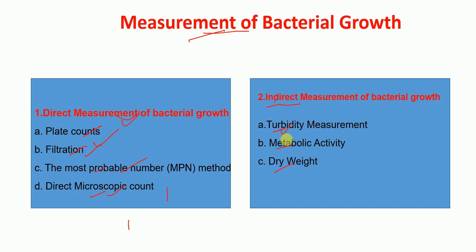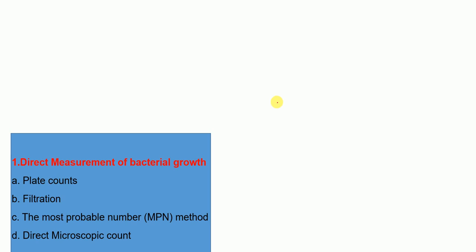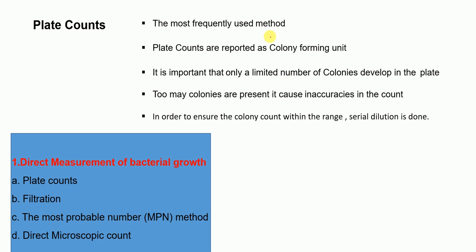Let's first talk about direct measurement of bacterial growth. The first method under direct measurement is called plate count. It is the most frequently used method, and the plate counts are reported as colony forming units, or simply CFU.